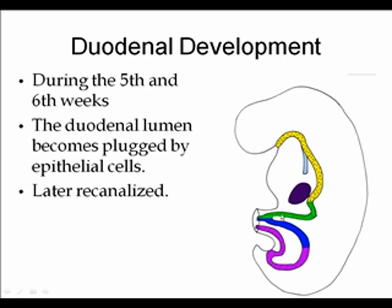An important process throughout the whole gut tube, especially in the region of the duodenum, is that during the fifth and sixth weeks the epithelial components derived from the endoderm proliferate rapidly and tend to fill up the lumen, so the lumen can become plugged by epithelial cells. Normally it later becomes recanalized and open so that we end up with a patent gut tube.